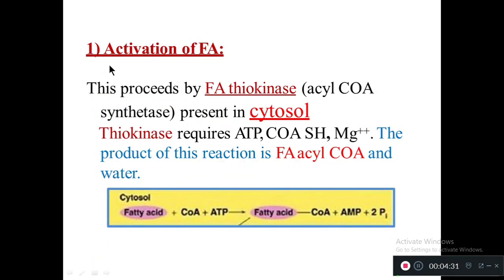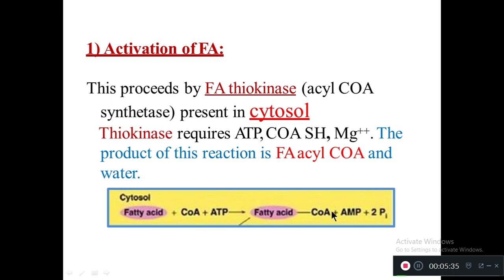Stage one is activation of fatty acid, which proceeds by fatty acid thiokinase, otherwise called acyl-CoA synthetase. This enzyme is present in the cytosol. Thiokinase requires an ATP molecule, CoA-SH, and magnesium. The product at the end of this reaction is fatty acyl-CoA.